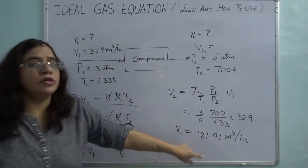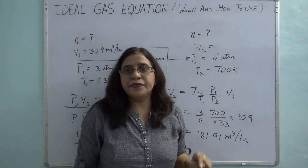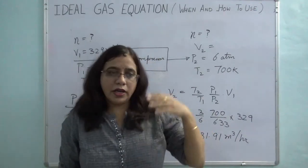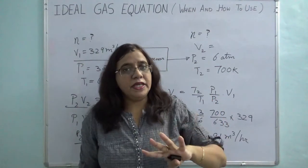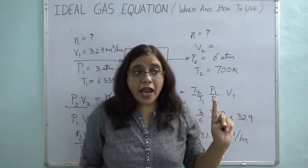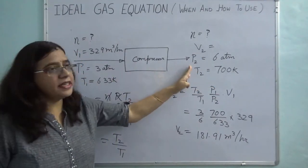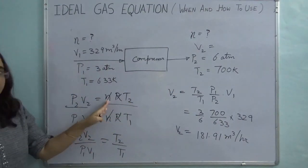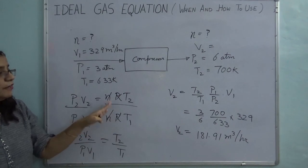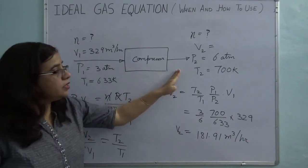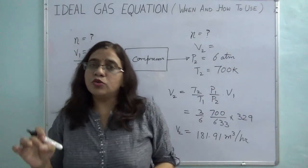So always remember these two smart methods. First: if you don't remember the R value, use the standard STP molar volume of 22.4 L/mol as a reference and take a ratio with standard conditions. Second: if you have inlet and outlet conditions, write ideal gas equations for both and take their ratio — R cancels, and if moles are conserved, N cancels too. Use these methods to solve problems efficiently in material balance calculations.